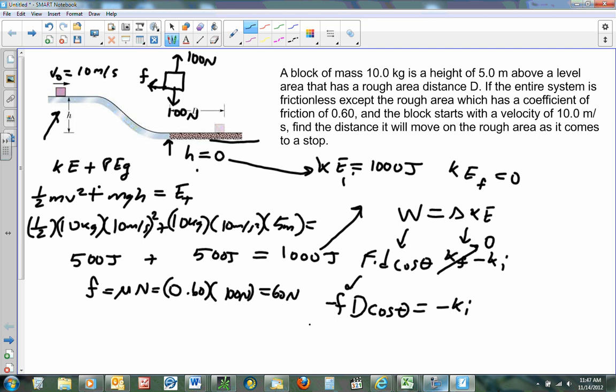So let's plug our numbers in. 60 newtons, which is negative, times my unknown d. Don't know that. Cosine of 180 degrees.